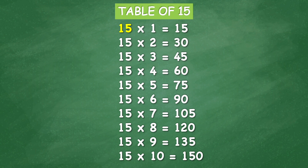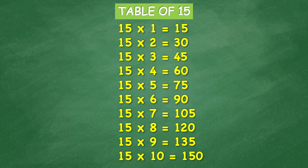Table of 15: 15 times 1 equals 15, 15 times 2 equals 30, 15 times 3 equals 45, 15 times 4 equals 60, 15 times 5 equals 75, 15 times 6 equals 90, 15 times 7 equals 105, 15 times 8 equals 120, 15 times 9 equals 135, 15 times 10 equals 150.